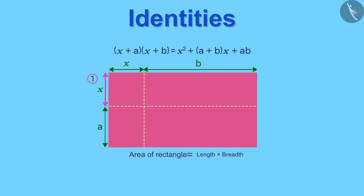The length of this square is x and the length of this part is a. Therefore, the total breadth of this rectangle is x plus a. The length of this square is x and the length of this part is b.